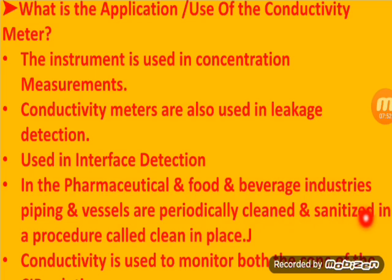In the pharmaceutical and food and beverage industries, piping and vessels are periodically cleaned and sanitized in a procedure called Clean-In-Place (CIP). The conductivity meter is an important instrument here. The CIP solution pipelines are monitored, and the concentration and water treatment plant operations are checked regularly. We examine samples to see how much concentration is present.